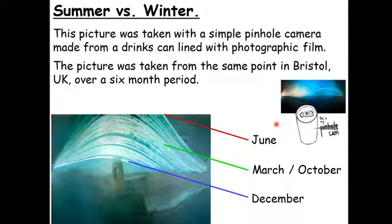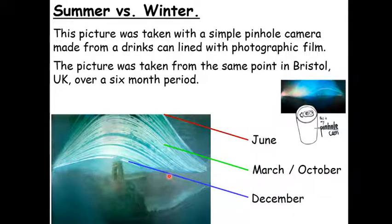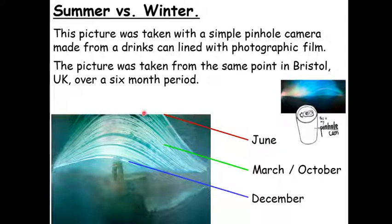What the image was showing was the path that the sun appeared to take through the sky over a six-month period. You can see that in December the sun appears much lower in the sky compared to June in the summer, where it appears much higher in the sky.